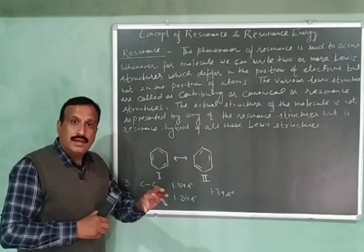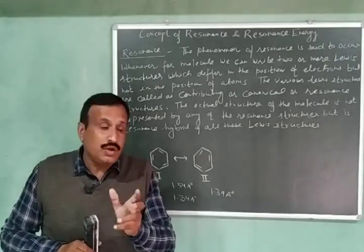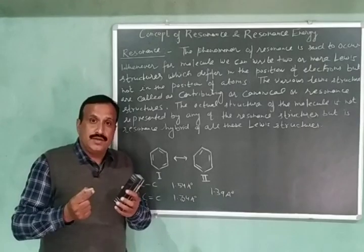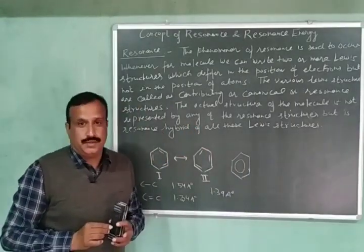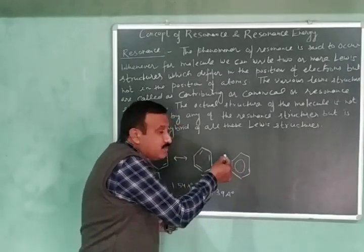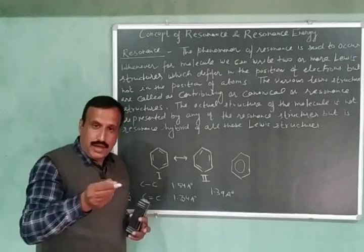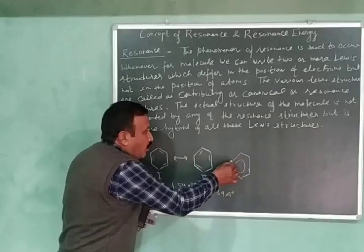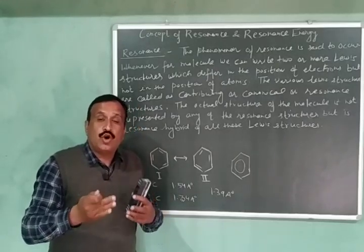So the bonds in benzene are not pure double bonds or pure single bonds. This means that the benzene ring cannot be represented by these two Kekulé structures. The actual structure of benzene will be represented differently. This circle inside the benzene ring tells us that the 6 pi electrons in the benzene ring are delocalized — these pi electrons are moving.